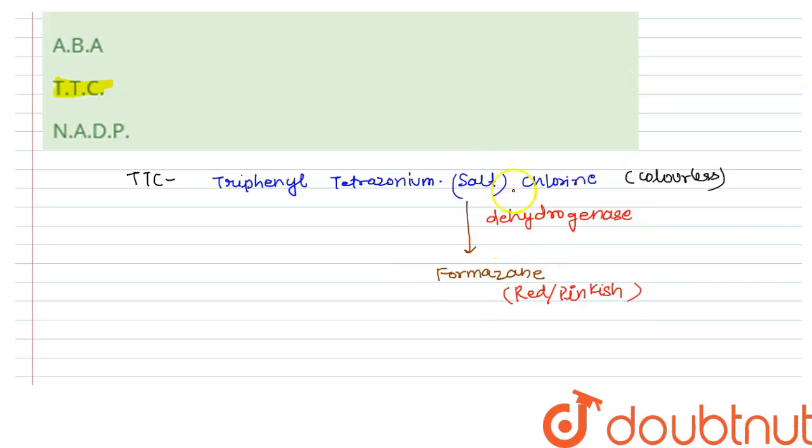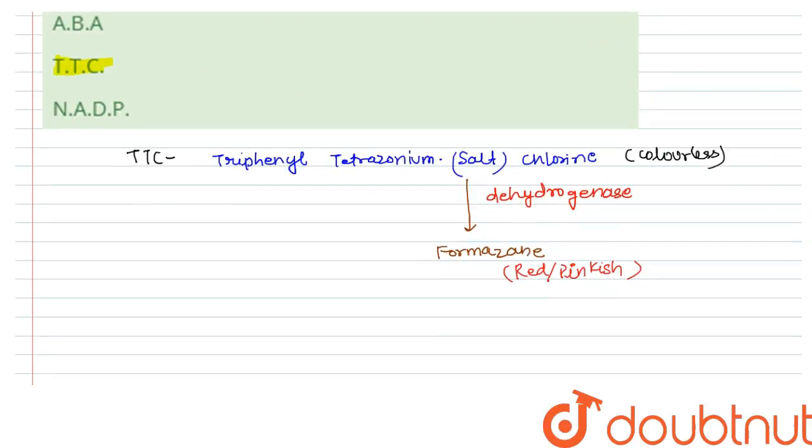Formazine converts this colorless TTC into a reddish or pinkish solution and it tells us that this seed is still viable.